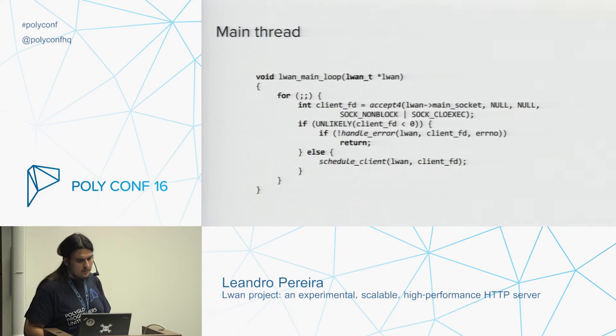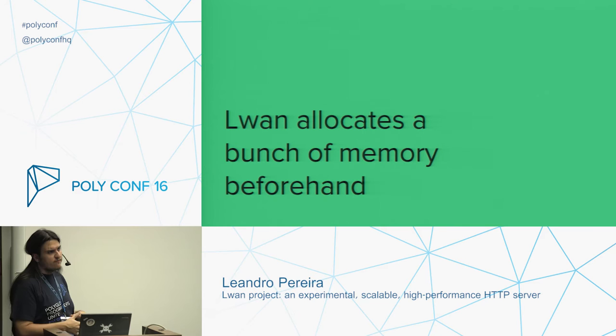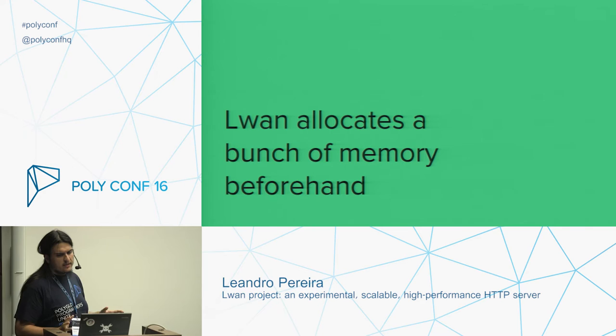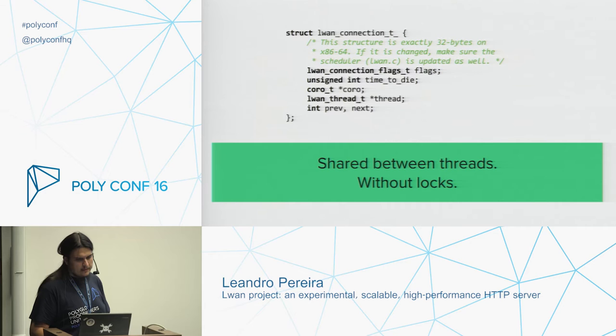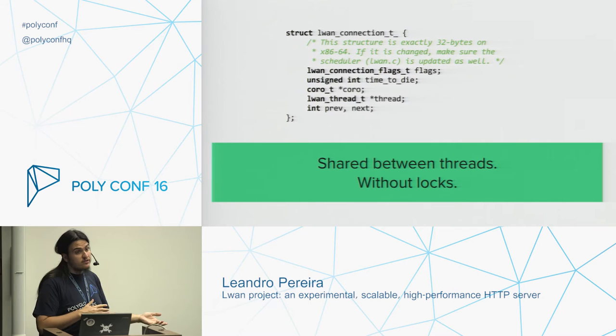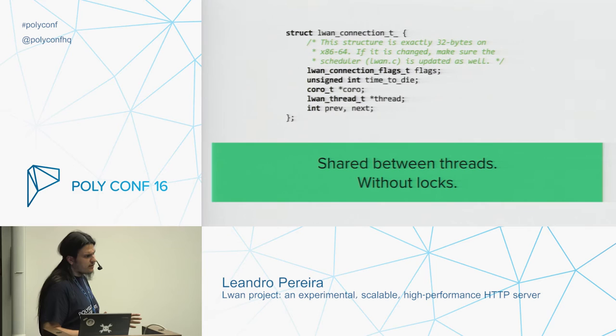I need to open a parenthesis first. Dynamic memory allocation from the heap can be quite expensive, so L1 pre-allocates a bunch of memory beforehand. One of the pre-allocated things is an array of structs holding information for client connections, and this array is indexed by the file descriptor — so it's efficient to find an element given the file descriptor and vice versa. It has as many elements as there can be file descriptors in the L1 process, and is shared between all threads without any kind of locks.